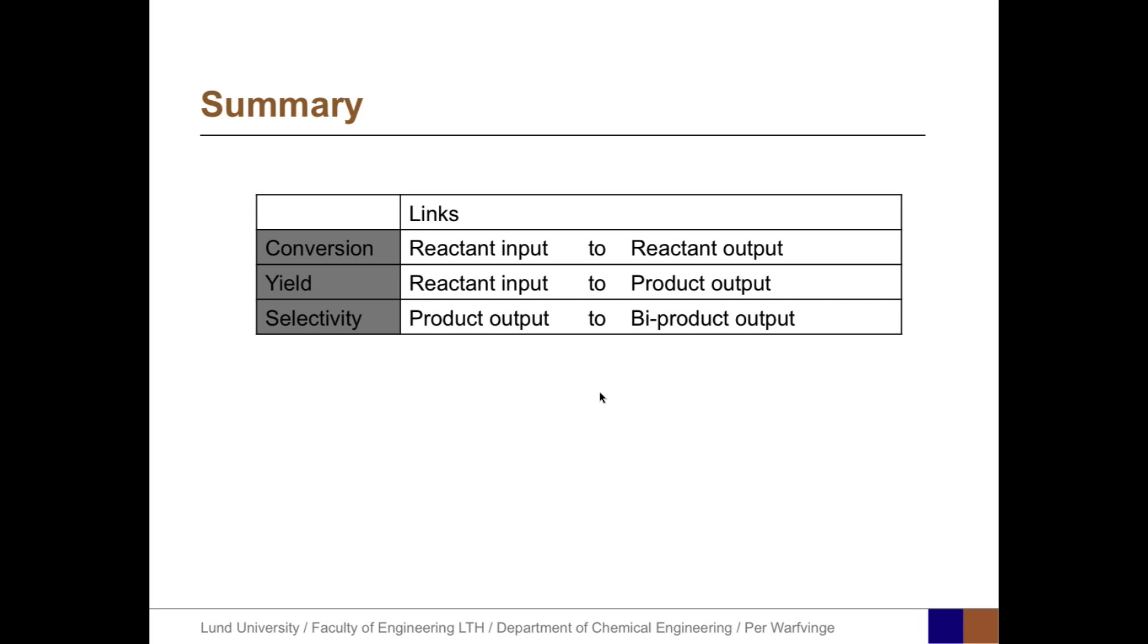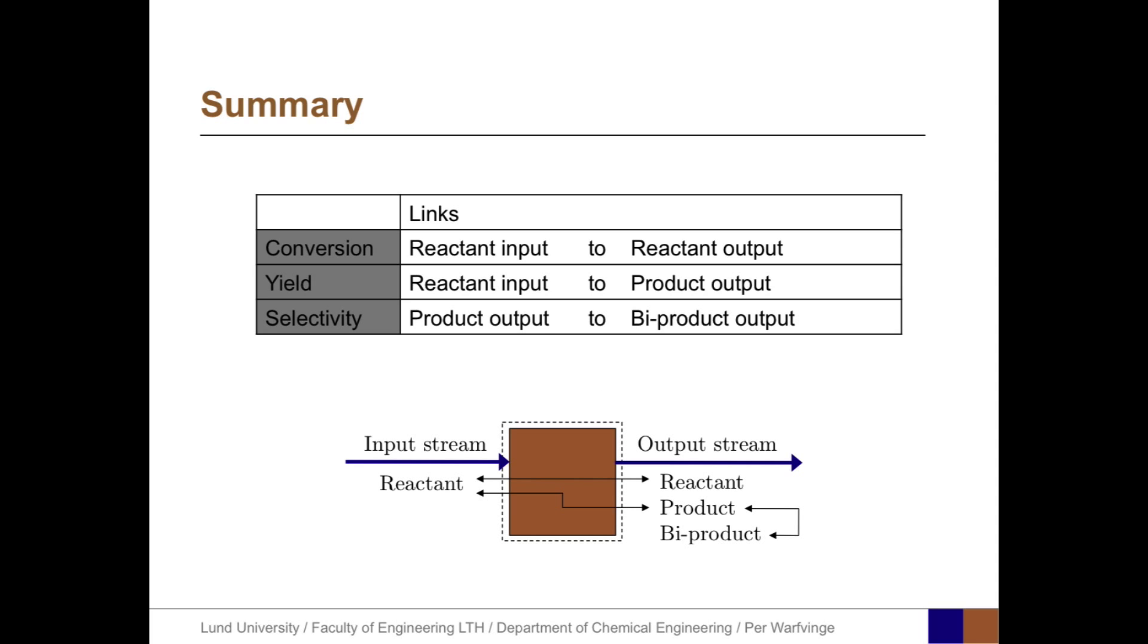Let's summarize the definitions. The conversion links the reactant input to the reactant output, while the yield links the reactant input to the product output, and the selectivity links the product output to the byproduct output. And this can be illustrated in this sketch, with input streams with the reactant and output stream with the reactant, product and byproduct.